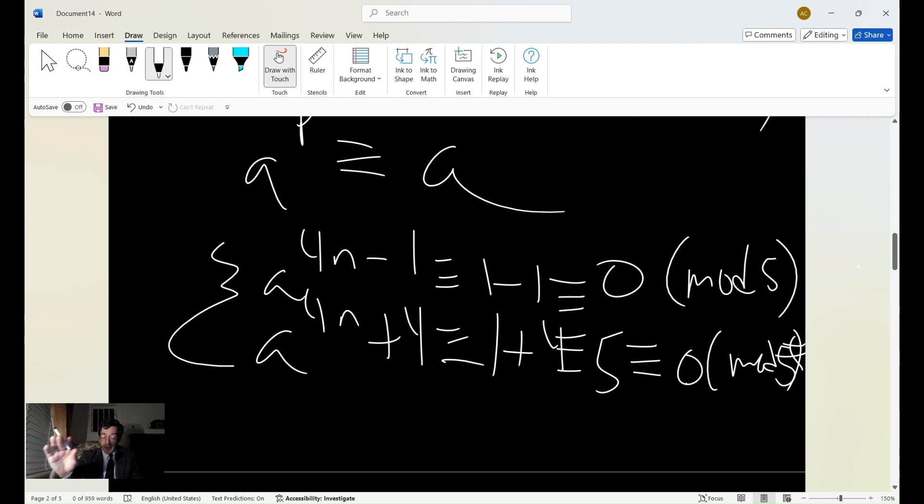Because the given expression, well, they told us in the problem that a is not divisible by 5. It's co-prime. And so that's why Fermat comes so much in handy here. And since the given expression, by the way,